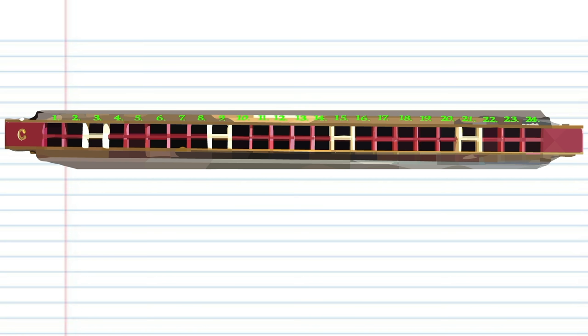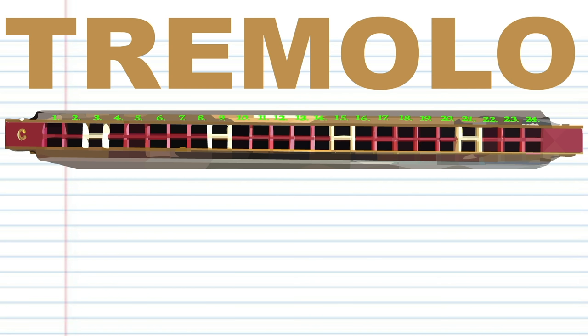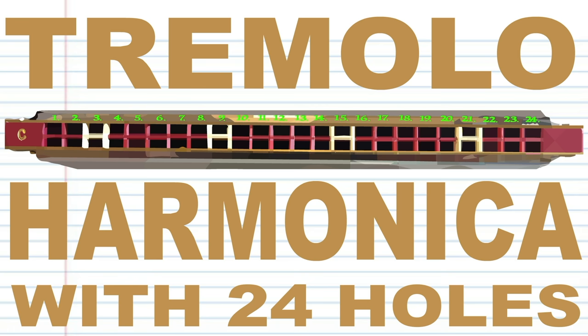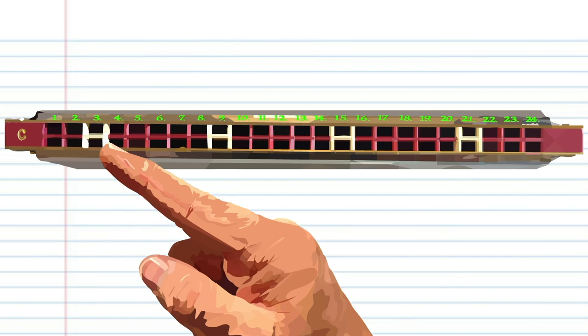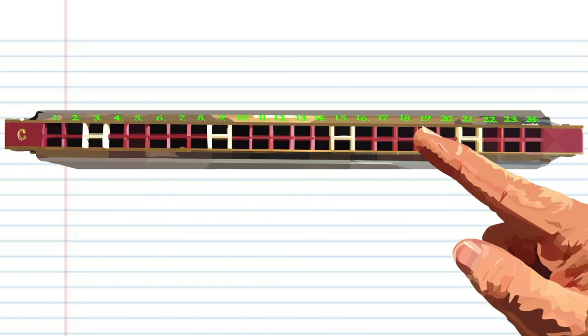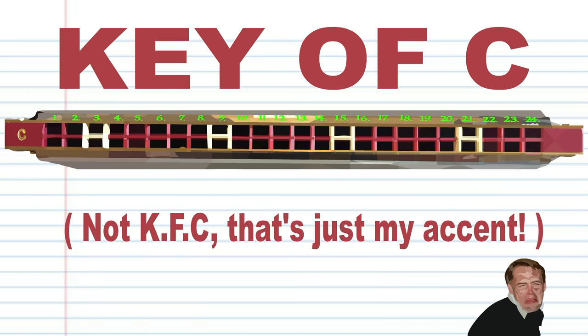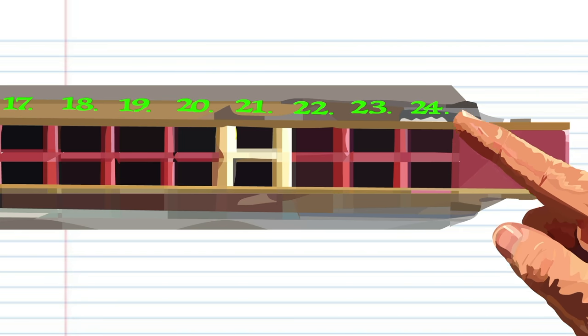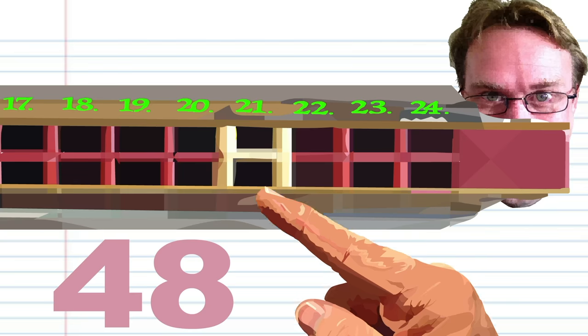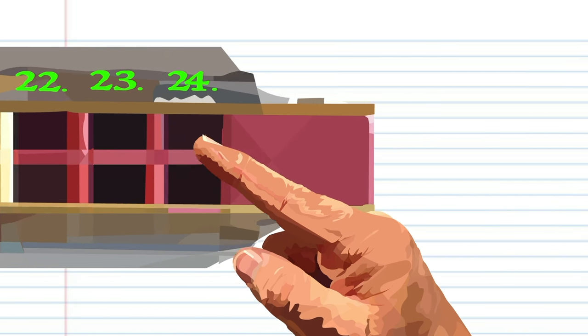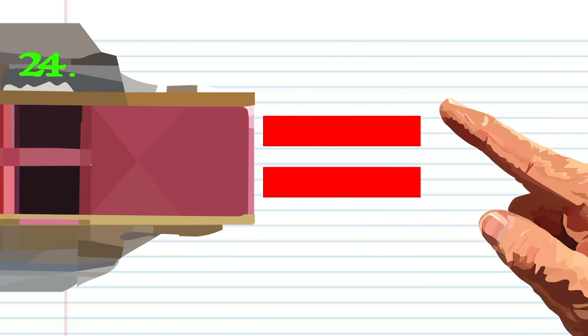Today we'll be looking at some of the fundamentals on how to play a tremolo harmonica with 24 holes. Here we have a tremolo harmonica with 24 holes in the key of C. Now we say 24 holes even though when you look at it it's technically 48 holes, but we treat the holes on top of and underneath each other as if they are one hole.